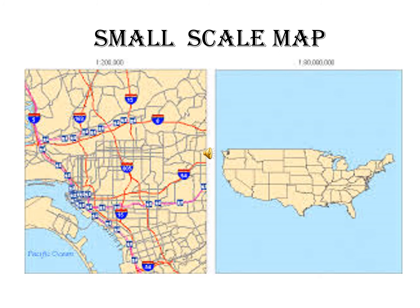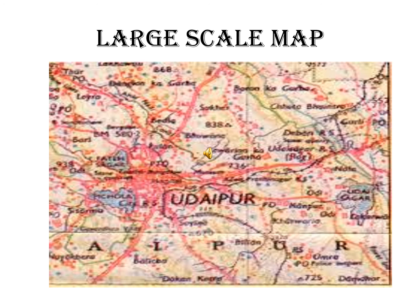There is a small scale and a large scale. What do we see in the small scale? This is a small scale map. This is a large scale map. This is a topographical map. Thank you.